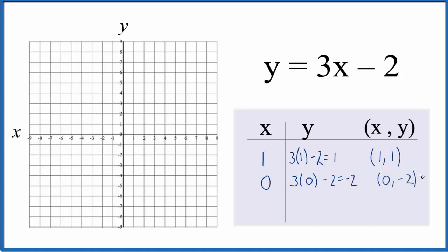It's a good idea to do 3 points because that way if you make a mistake, you'll really see it on the graph. So let's do negative 1. 3 times negative 1 minus 2, that's negative 3 minus 2, we get negative 5. So our point is (-1, -5).